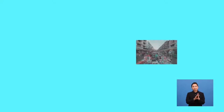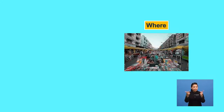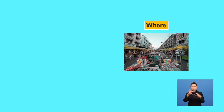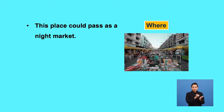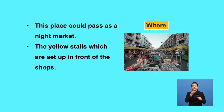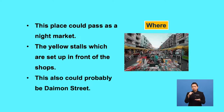Let's continue with the next picture. Look at how colorful it is. Find details that tell you where this place might be. There are stalls and different people selling all kinds of things openly. This place could pass as a night market. Apart from that, you can mention about the yellow stalls which are set up in front of the shops. This could probably also be Damon Street.